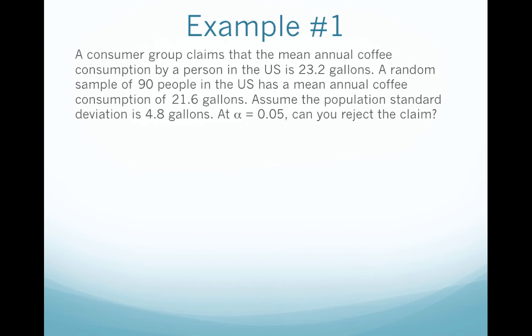Let's step through this. Step one: write the null and alternative. We read that the mean annual coffee consumption is 23.2 gallons, so mathematically we write mu equals 23.2. Because it is equals, it is the null, and because that's the one we're reading, it is the claim. From there we write the alternative as the opposite: mu is not equal to 23.2. Next, is this going to be z, t, or proportion? Hopefully you're thinking z because we read about the population standard deviation.